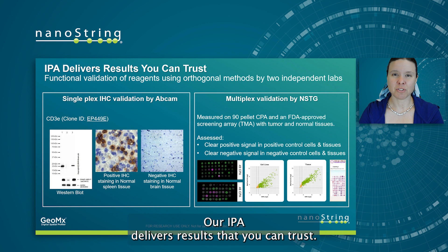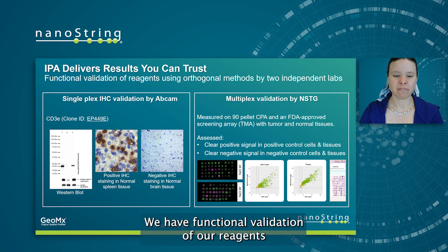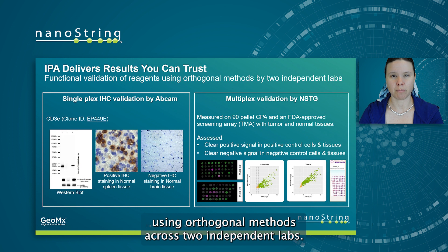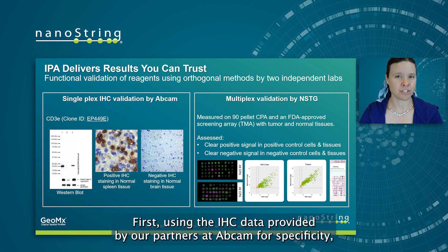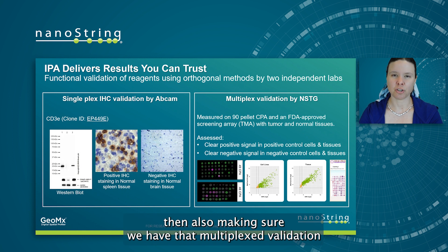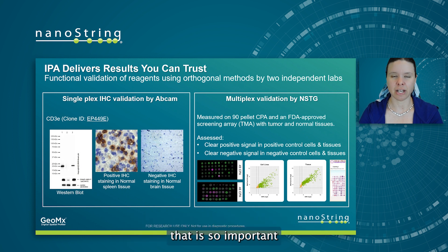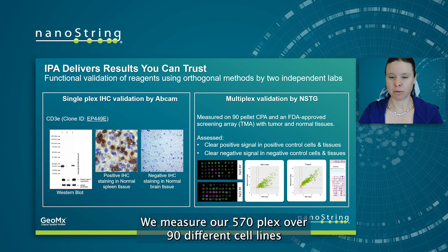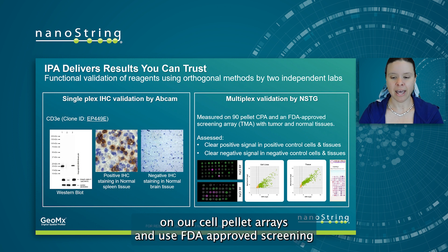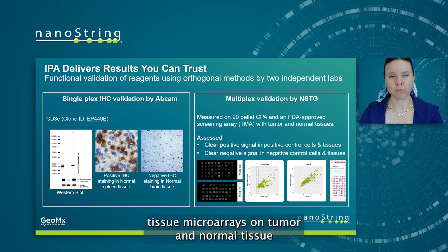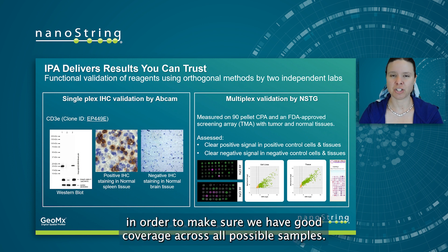Our IPA delivers results that you can trust. We have functional validation of our reagents using orthogonal methods across two independent labs — first using the IHC data provided by our partners at Abcam for specificity, and then also ensuring we have multiplex validation via our internal labs at Nanostring. We measure our 570-plex over 90 different cell lines on our cell pellet arrays and use FDA-approved screening tissue microarrays on tumor and normal tissue to ensure good coverage across all possible samples.